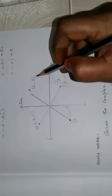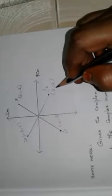Now plotting these points: z has real part 2, imaginary part 3 — first quadrant, both positive. iz has real part minus 3, imaginary part 2 — second quadrant. i²z has real part minus 2, imaginary part minus 3 — third quadrant. i³z has real part 3, imaginary part minus 2 — fourth quadrant. Try this!